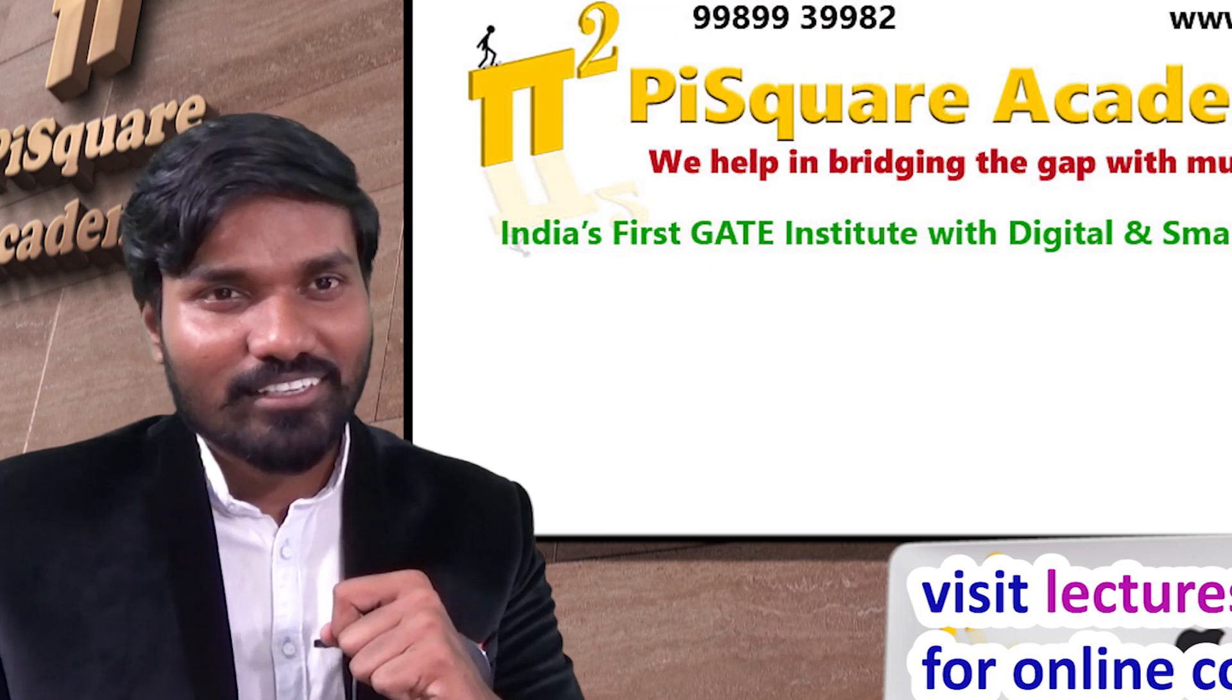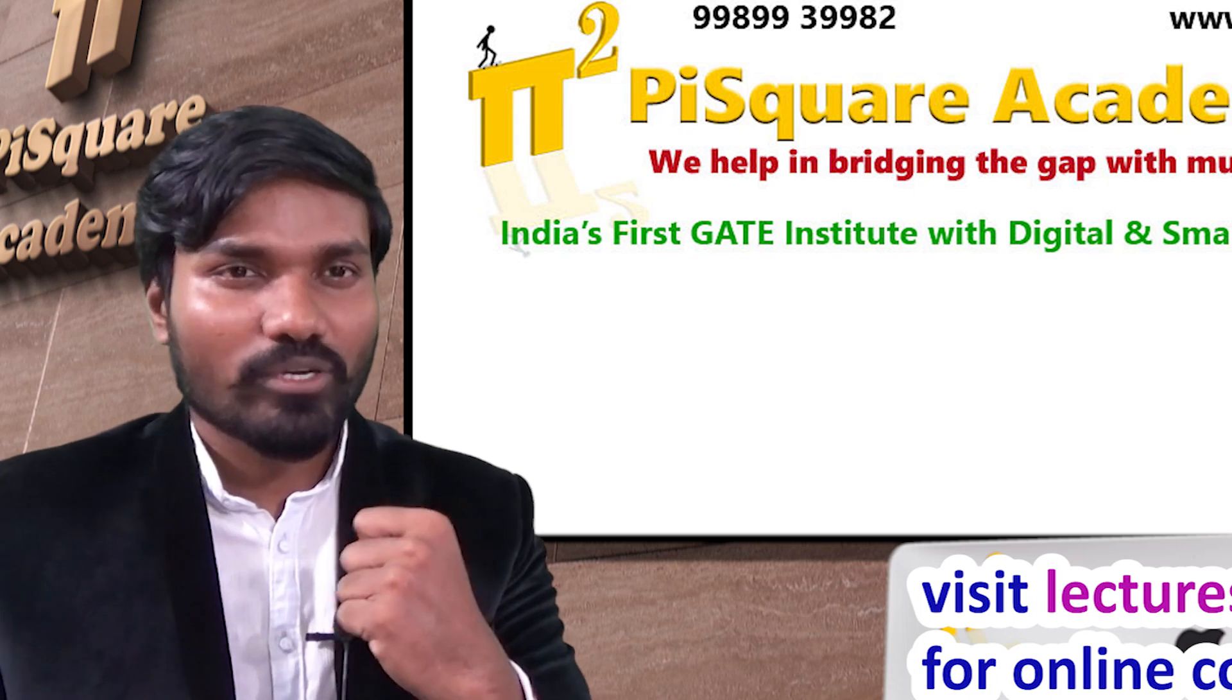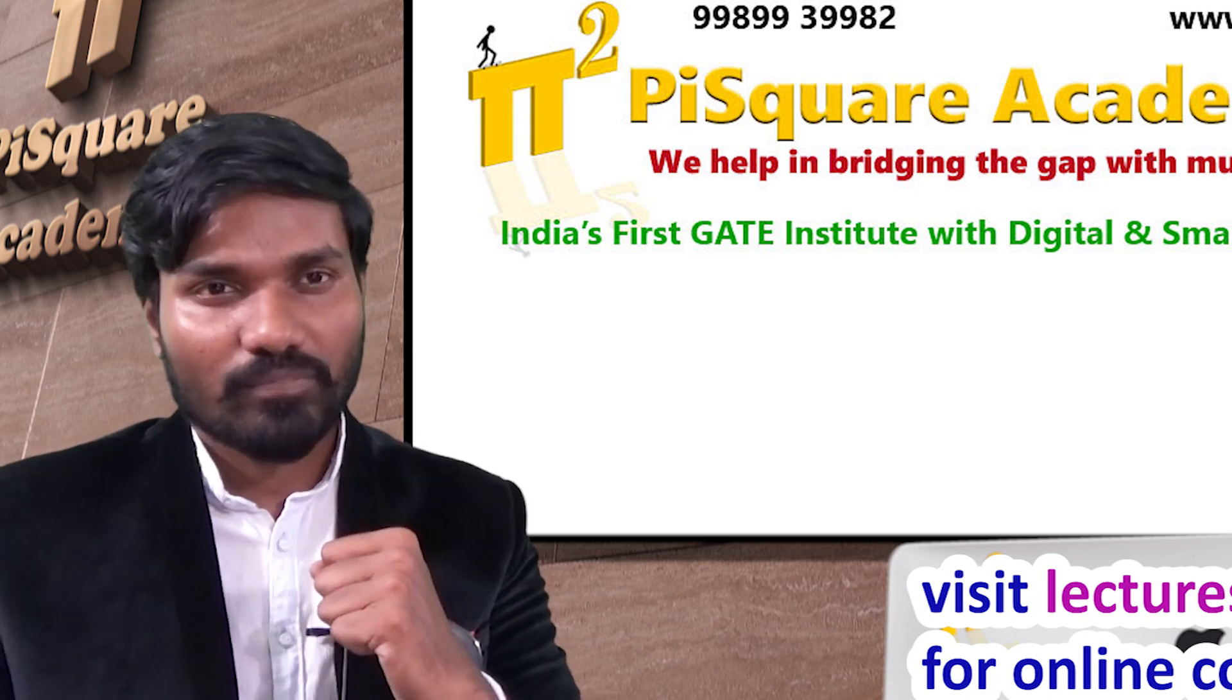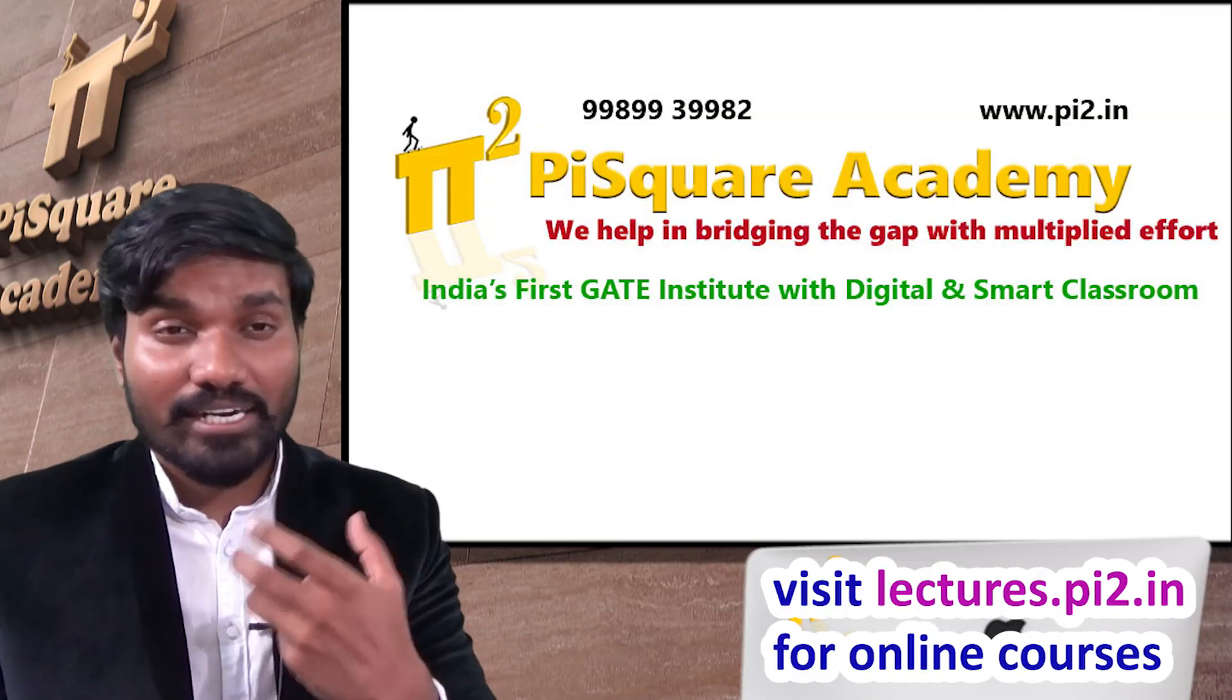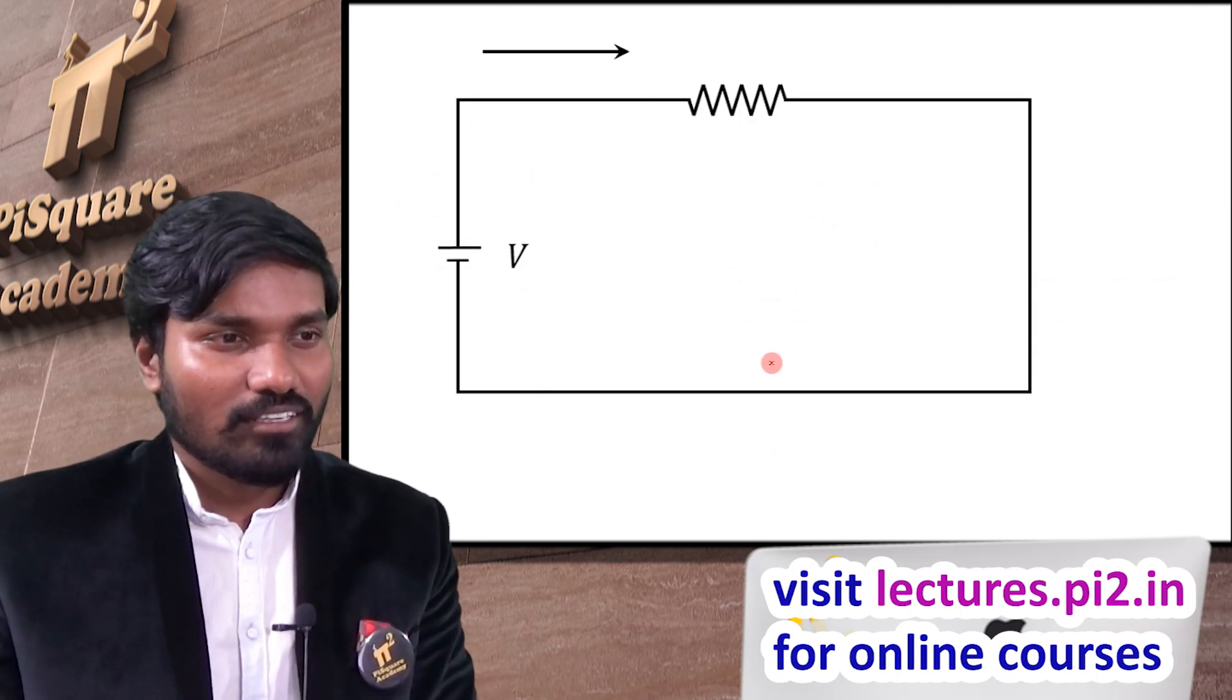Now, coming to the topic, you know, if current is going inwards, we will represent with cross. If current is going outwards, we will represent with dot. Now how is it represented? Why is it represented like that? Let me take a simple circuit. This is a simple circuit.